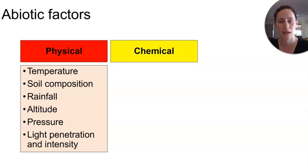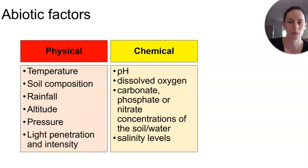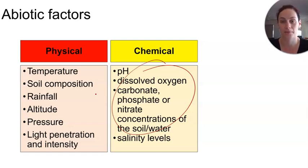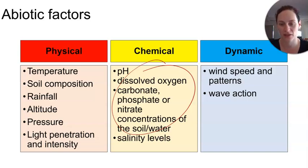When we're talking chemical abiotic factors, it's things like pH, dissolved oxygen in an aquatic environment, carbonate, phosphate, and nitrate concentrations in soil, and salinity levels. We're going to talk a lot about these in terms of their cycling ability through an ecosystem to keep everything else living. We're also talking about dynamic abiotic factors like wind speed and patterns and wave action — only a few species are able to withstand really harsh sea winds, salty spray, and generally rough conditions.